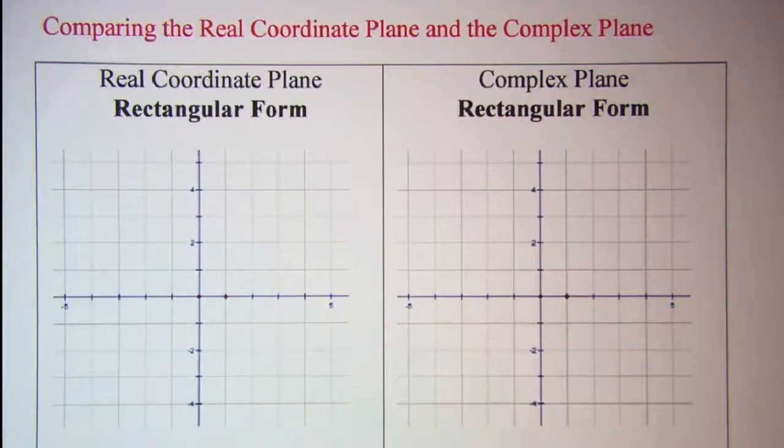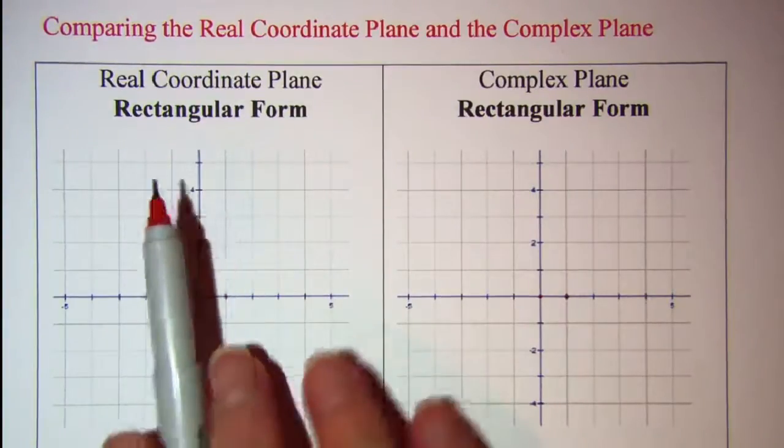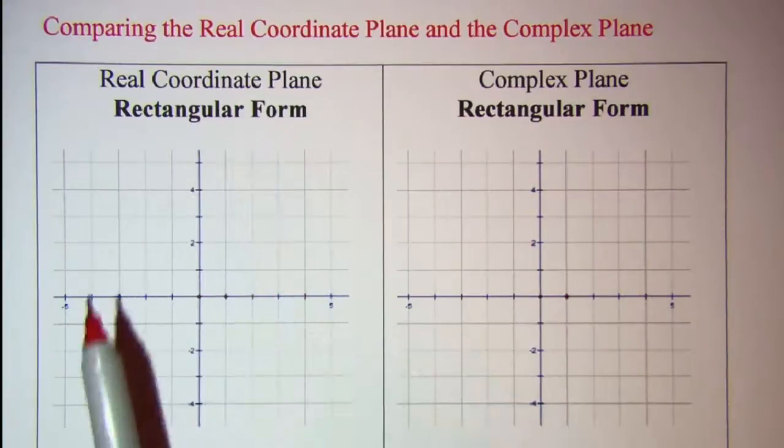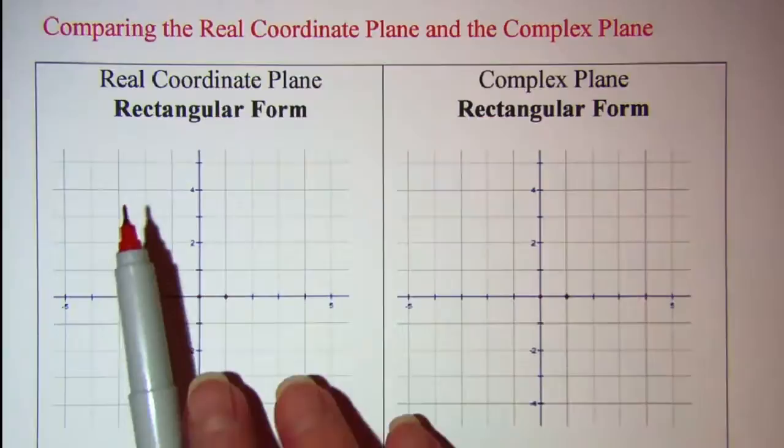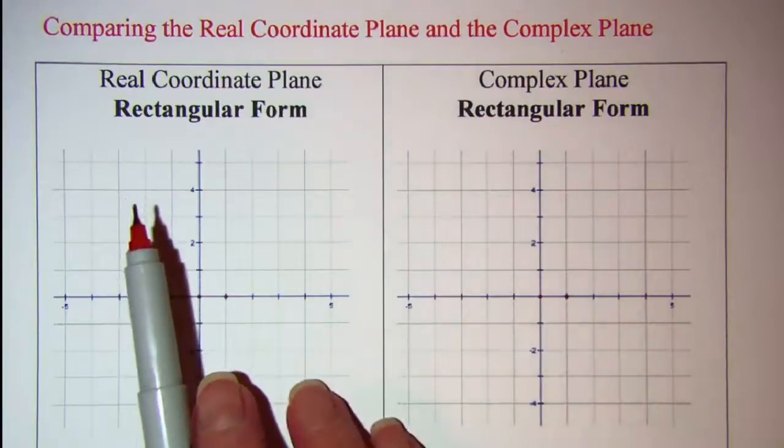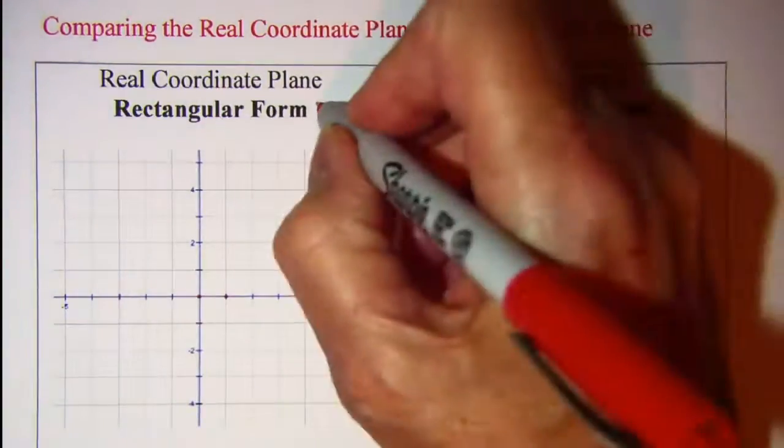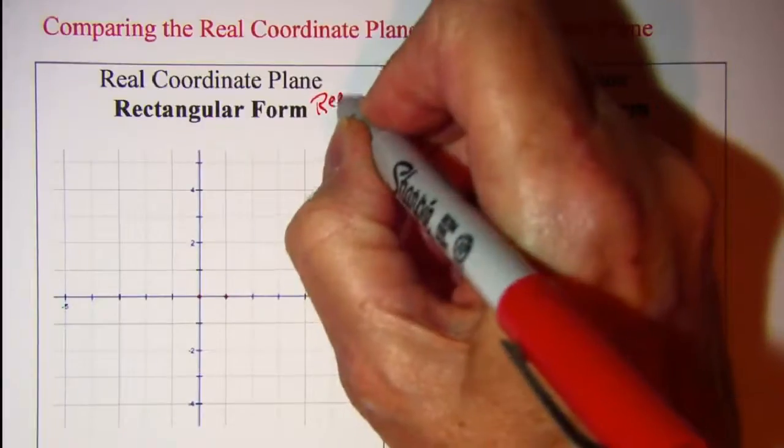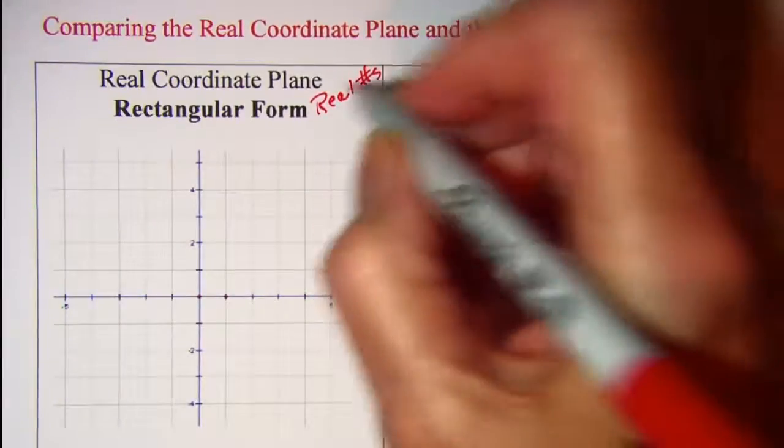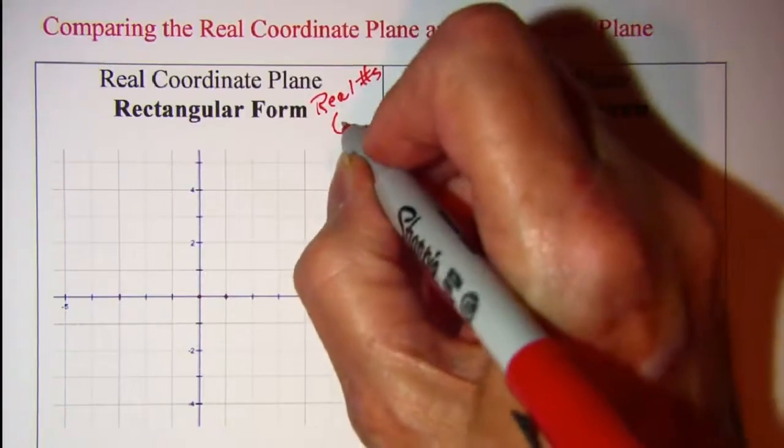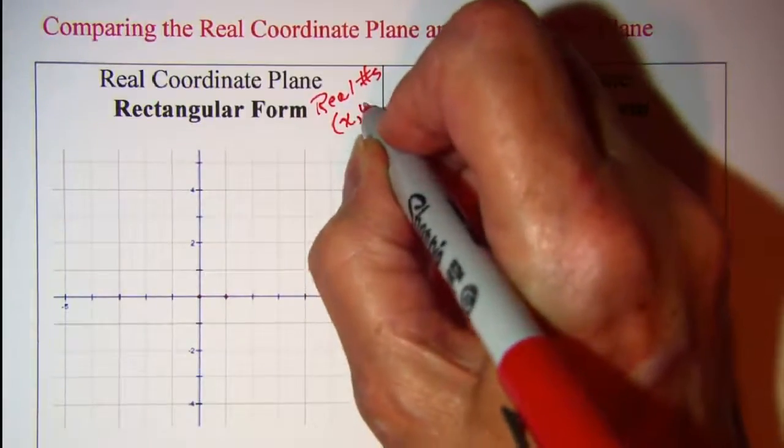In this video we'll be comparing the real coordinate plane and the complex plane. On the left you'll see the plane that we'll be using to designate our real number coordinates, and our real numbers we will show as an ordered pair (x, y).